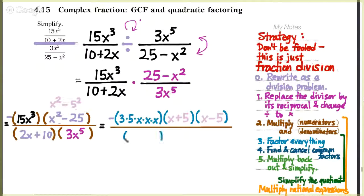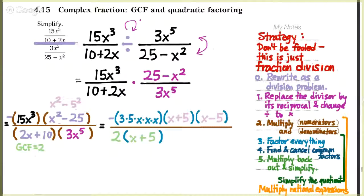Now what about 2x plus 10? Well, it's got a greatest common factor between those two terms of 2. So we can bring out that 2 and be left with a cofactor of x plus 5. Then 3x to the fifth is 3 times 5 factors of x. So we've factored everything in sight completely.